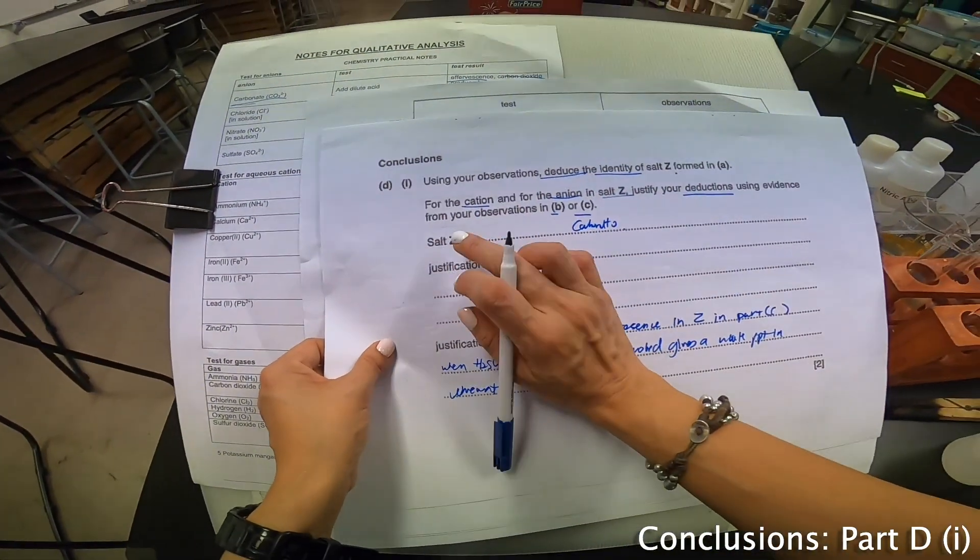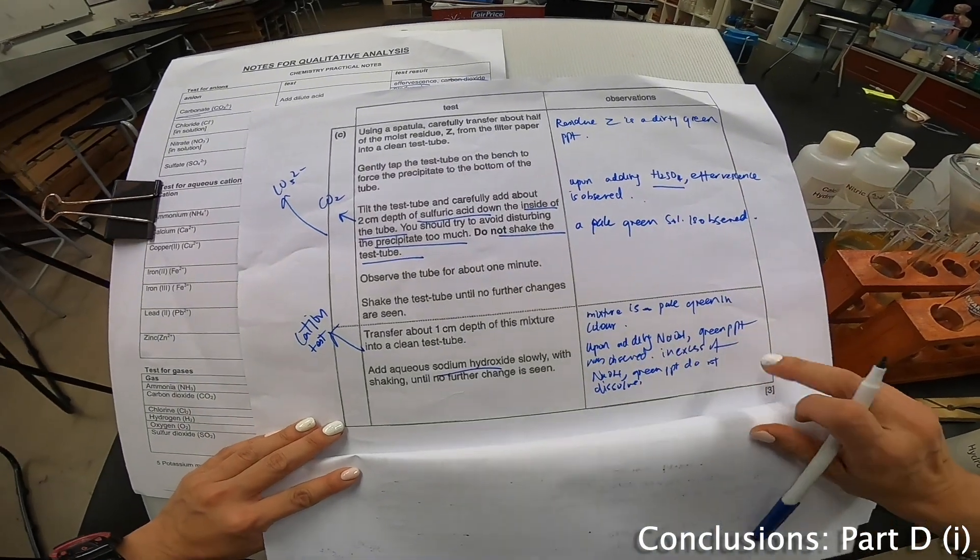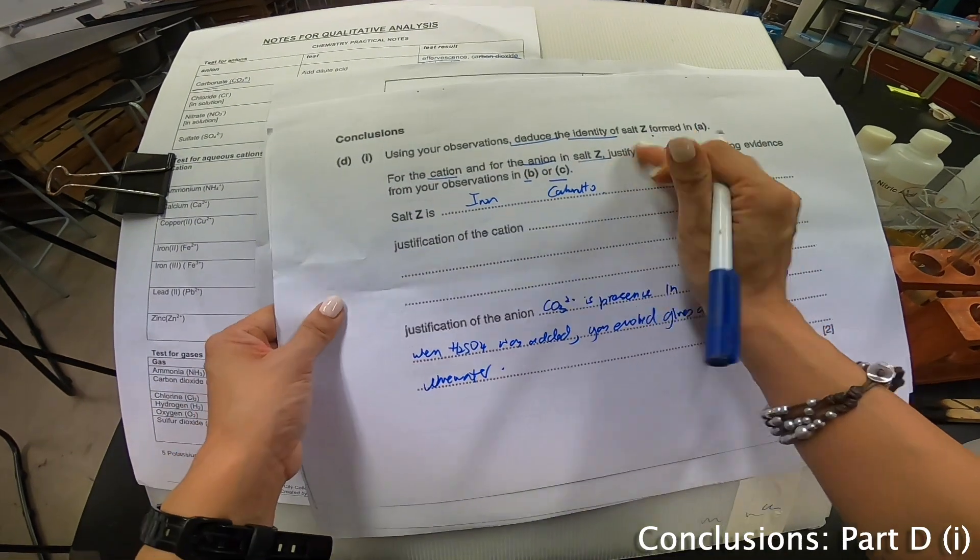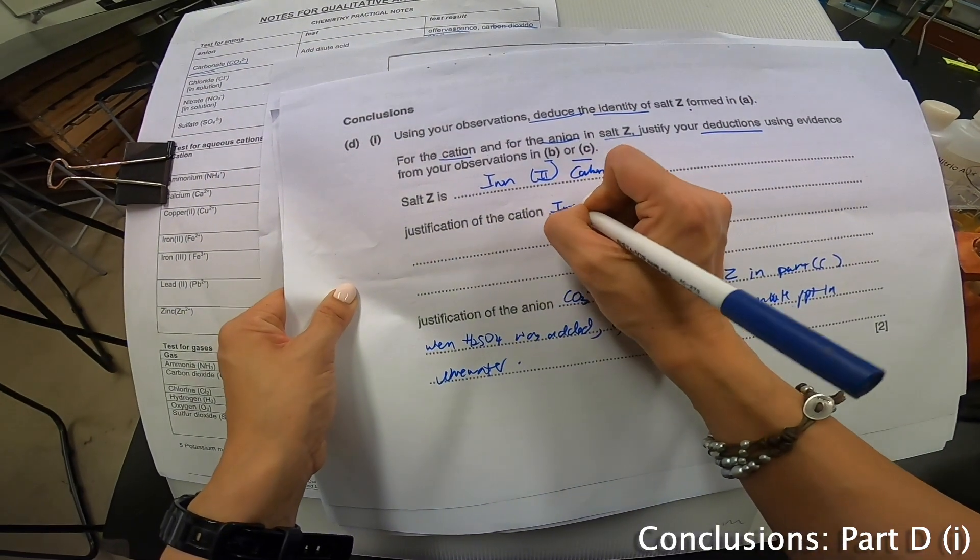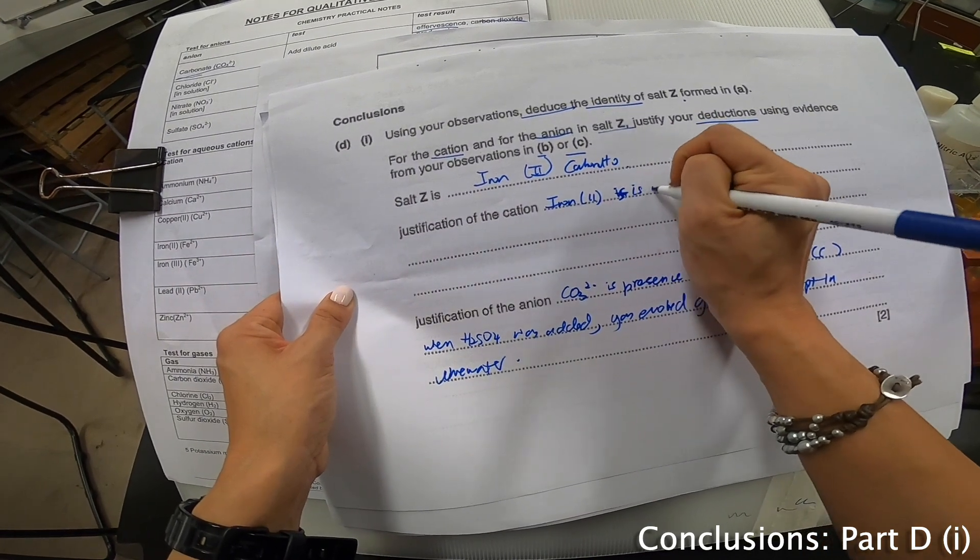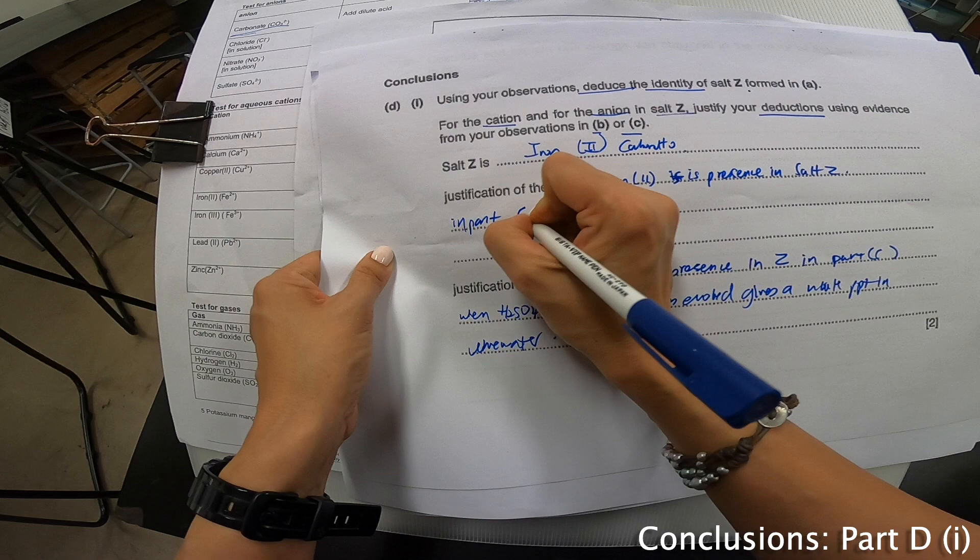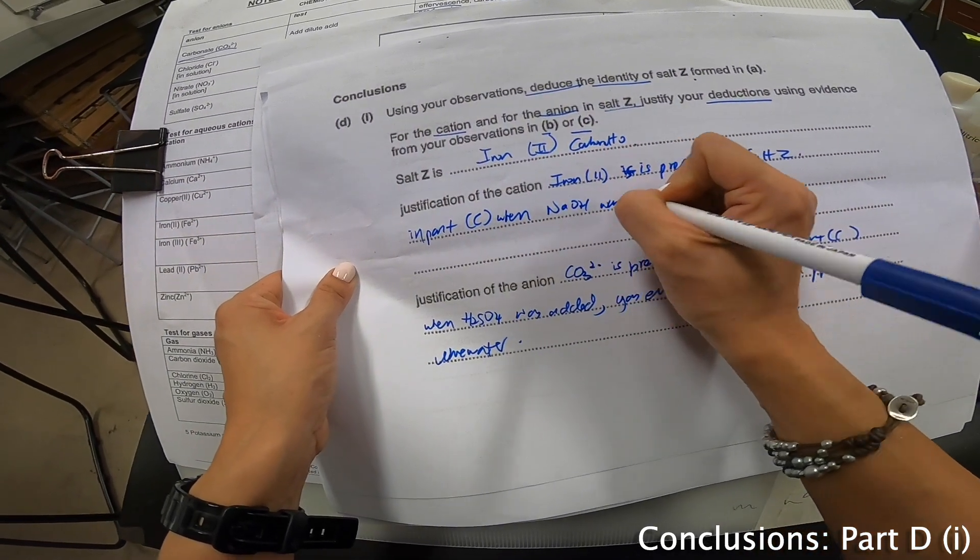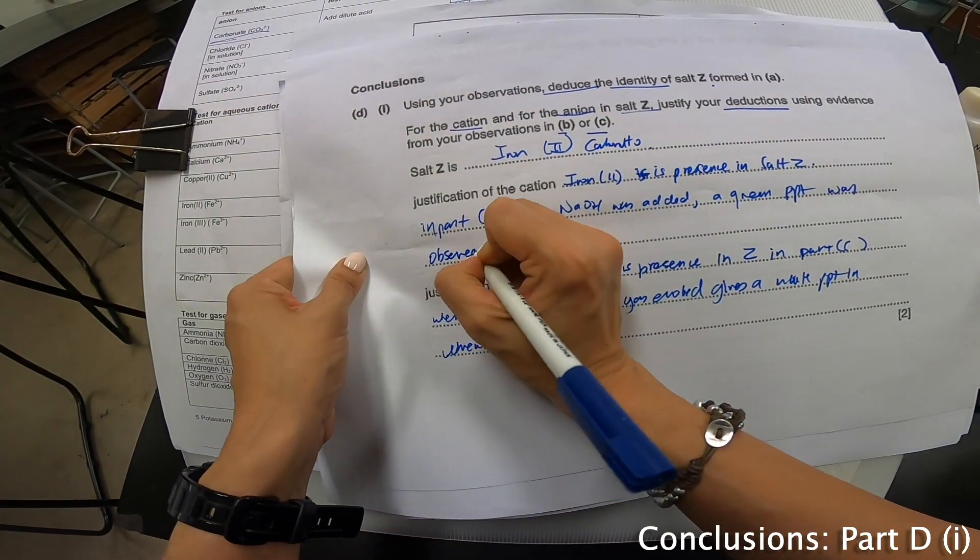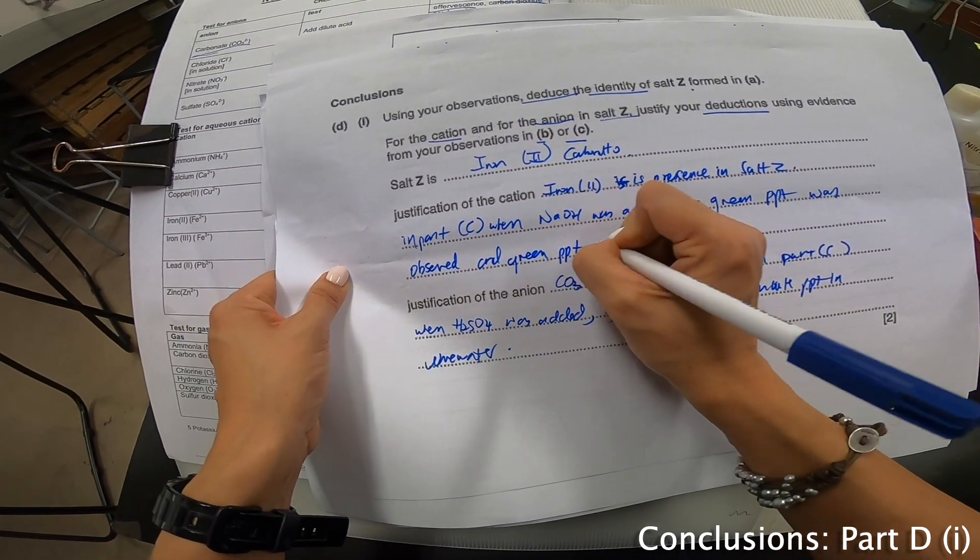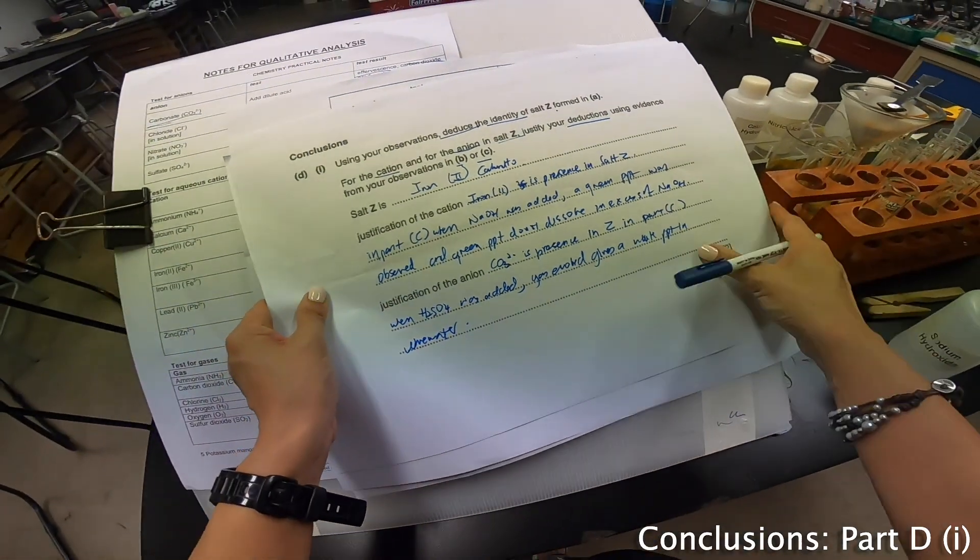Now, so what on earth is my Z now? My Z is none other than iron. And why do I say that? Because over here in part C, this portion, I saw a green PPT was present, Fe²⁺. So, and that is Z. So I'm going to write iron 2. Be careful, make sure you write down the Roman numbering over here. Justification for cation. Iron 2 is present in salt Z. In part C, when NaOH was added, a green PPT was observed, and green PPT do not dissolve in excess of NaOH. Voila, full two marks.